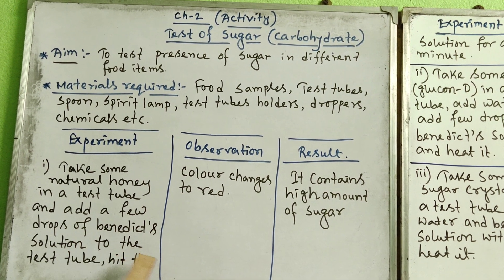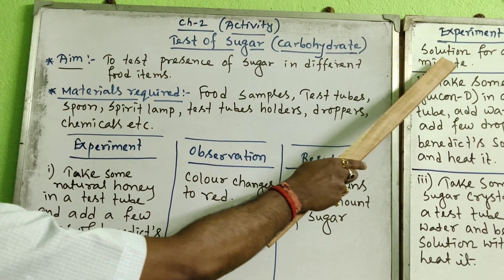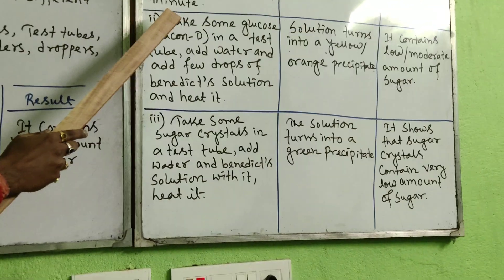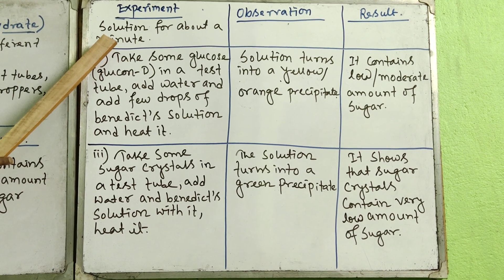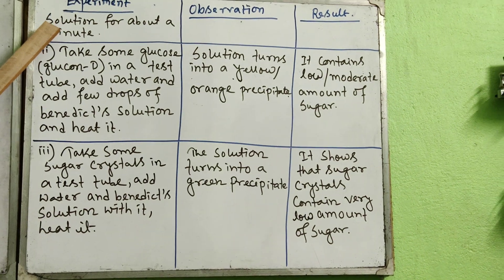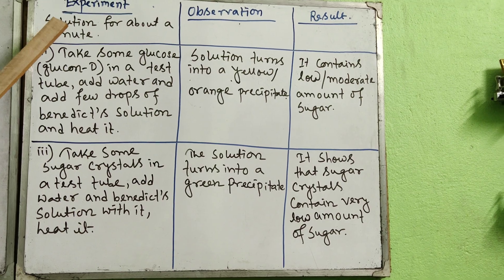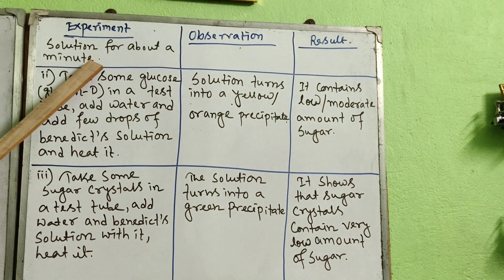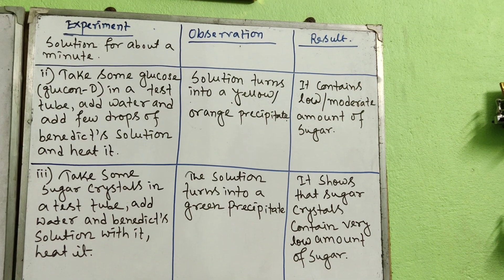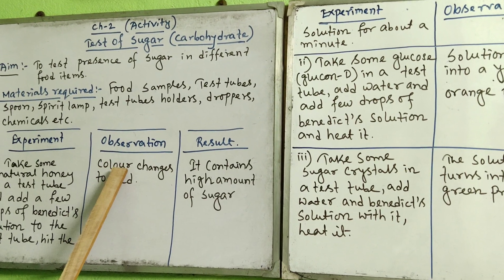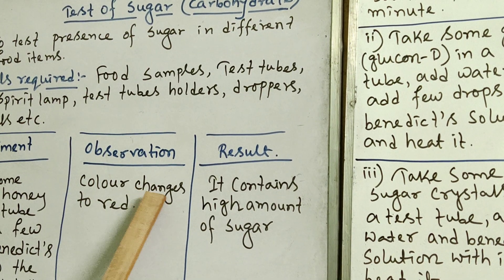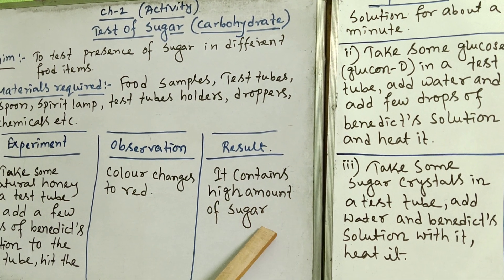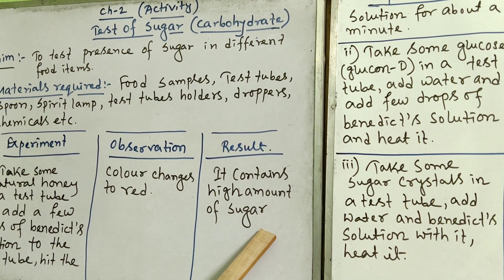First experiment: Take some natural honey in a test tube and add a few drops of Benedict solution to it, then heat the solution for about a minute. Benedict solution will be explained during the lab or in this video. After one or two minutes, observe the color change. If the color changes to red, it confirms that honey contains a high amount of sugar.